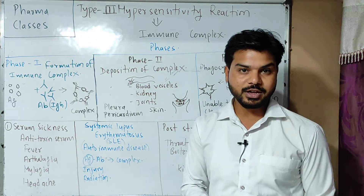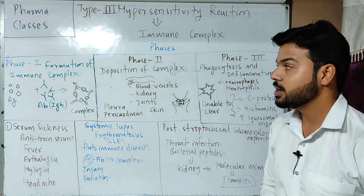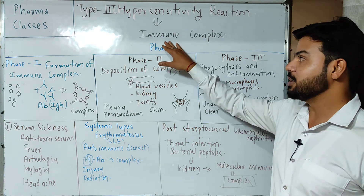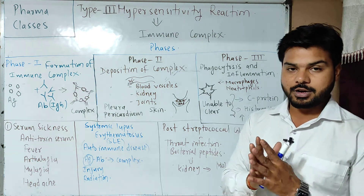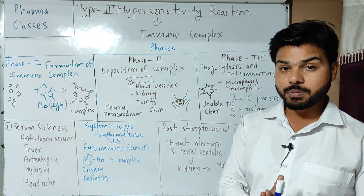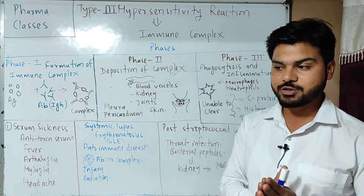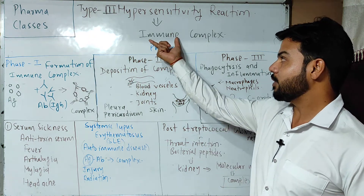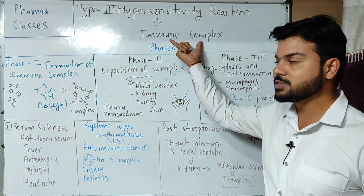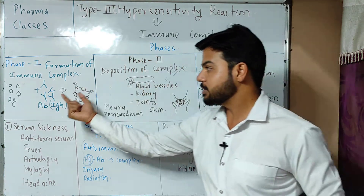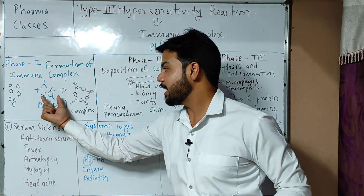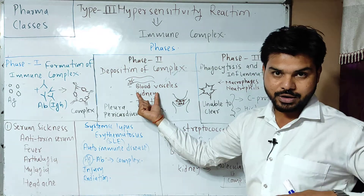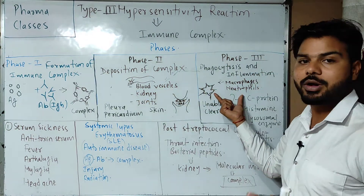Hello and most welcome to pharmacy classes. I am Vishal. Today we will learn type 3 hypersensitivity, which is also known as immune complex hypersensitivity. This hypersensitivity is mediated by antibody, especially IgG antibody. We call it immune complex hypersensitivity because it is due to the formation of antigen-antibody complex that is deposited to different organs and tissues, causing an inflammatory response.